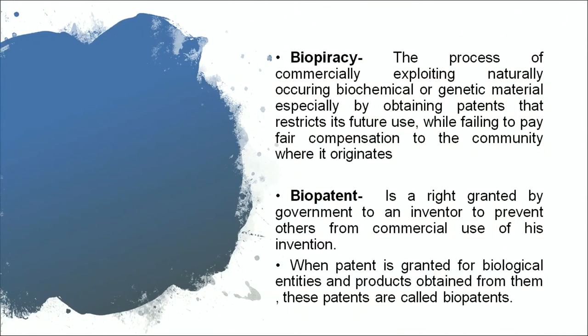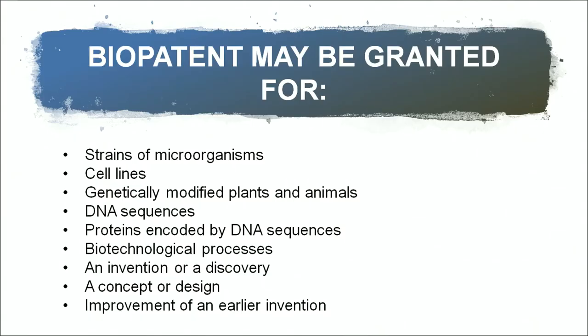What is a biopatent? It is a right granted by a government to an inventor to prevent others from commercial use of the invention. When a patent is granted for biological entities and products obtained from them, these patents are called biopatents. Biopatents can be granted for strains of microorganisms, cell lines, genetically modified plants and animals, DNA sequences, proteins encoded by DNA sequences, biotechnological processes such as the polymerase chain reaction (PCR), and inventions, discoveries, concepts, designs, or improvements of an earlier invention.